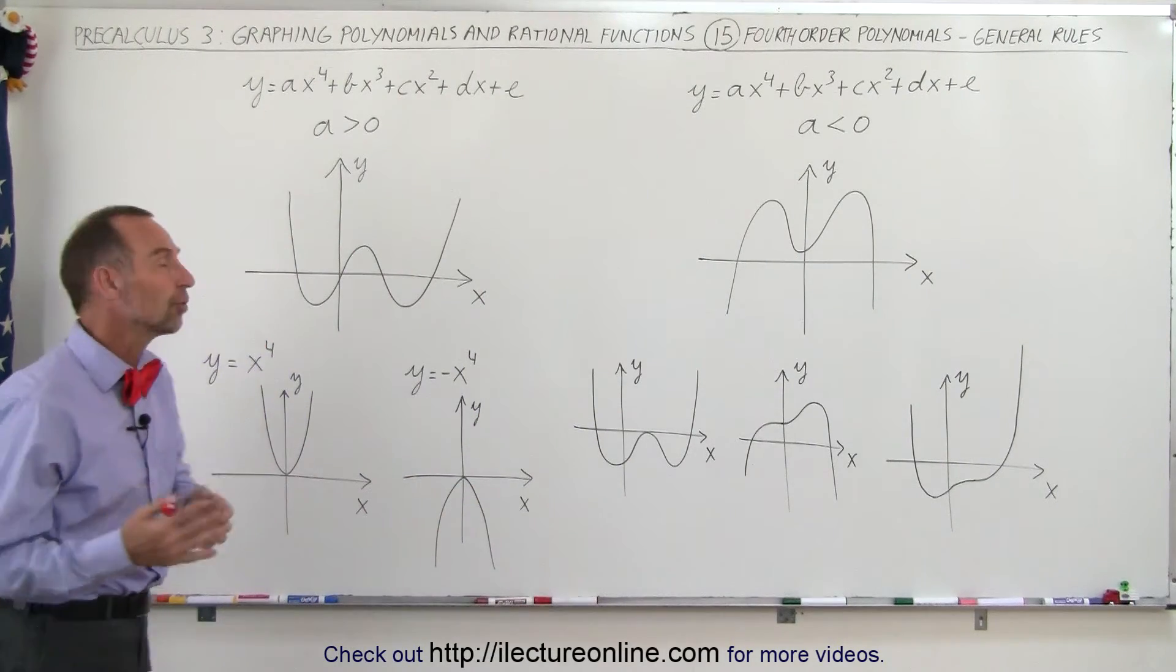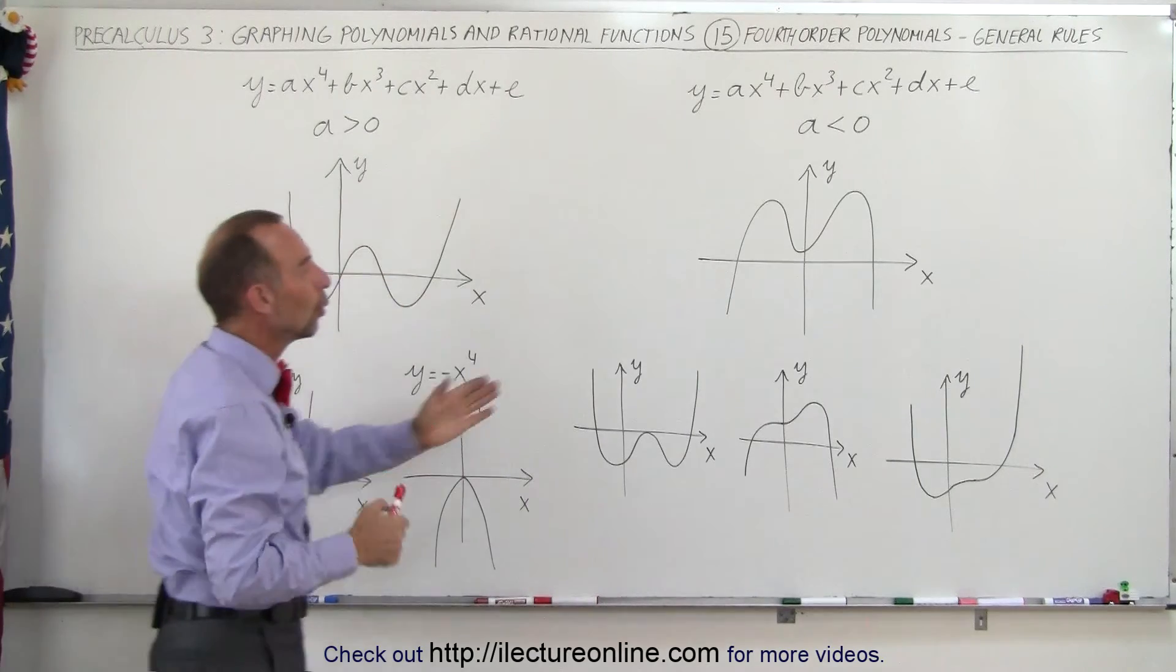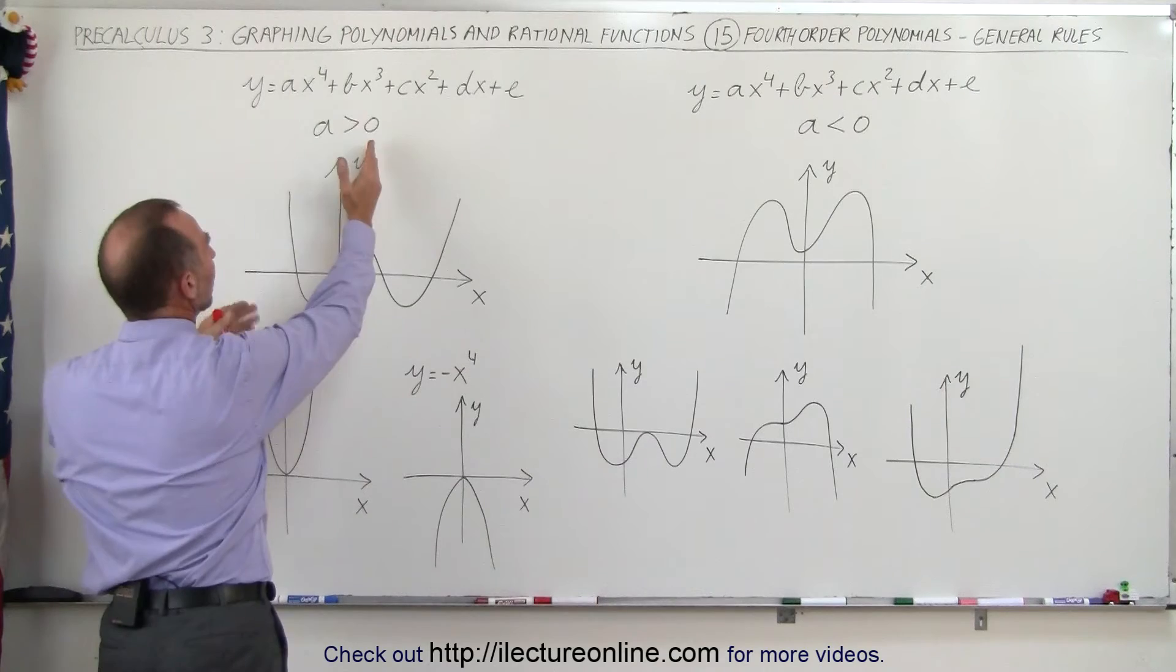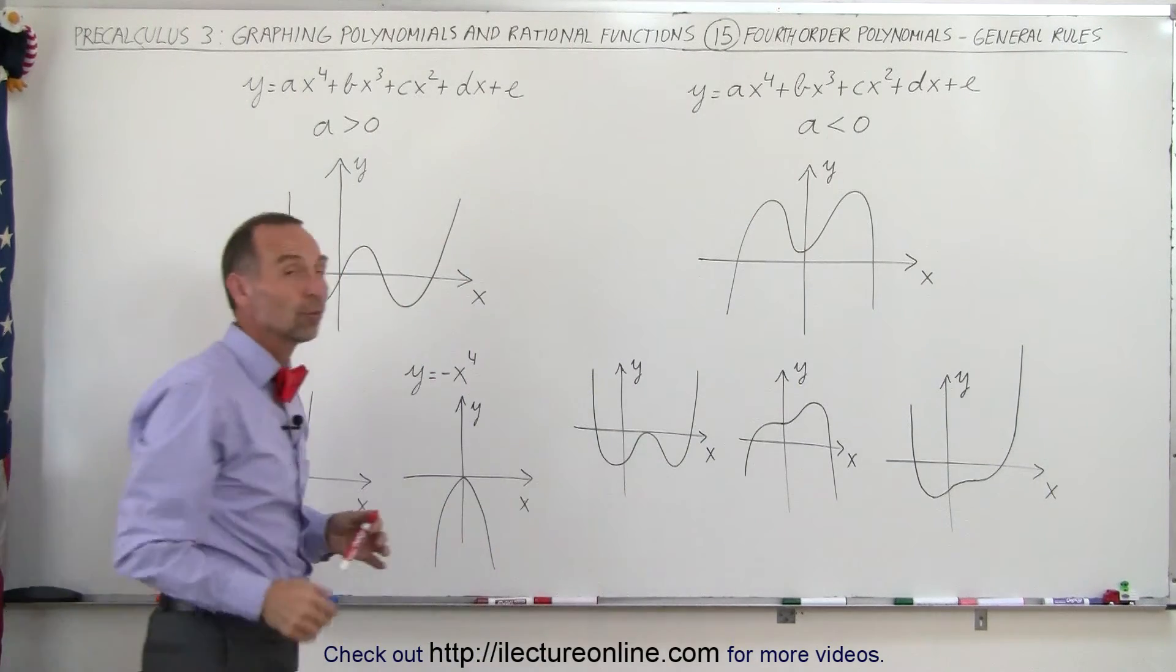In either case, the most likely scenario is that it looks kind of like a W, either a straight-up W or an upside-down W. This is where a is a number larger than zero, and here a is a number smaller than zero.